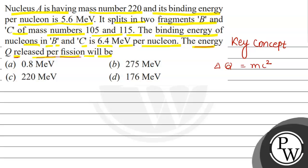What is given here? Nucleus A splits into two parts, B and C. These fragments are B and C, and their mass numbers are given. One is 105.